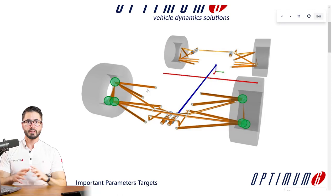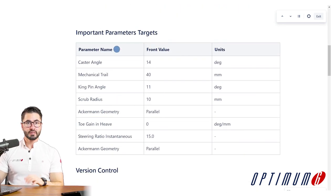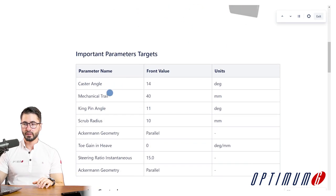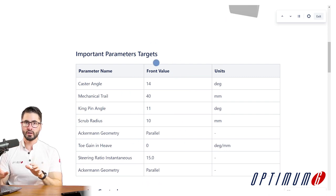Now we can move on to analyzing specifically the upright, which is the focus of this episode. These are the upright pick-up points we'll design together — wishbone pick-up points as well as the tie-rod pick-up point. These are the targets we define for each of the parameters mostly connected to the upright: caster, mechanical trail, kingpin, and so on. We'll not focus too much on the values themselves, but before we move forward I want to quickly cover what we get from each of them.